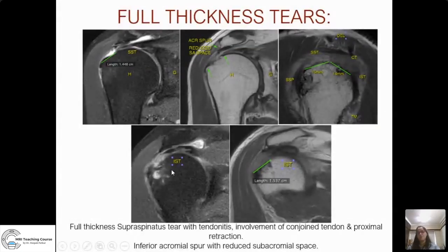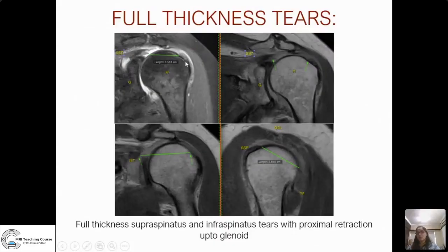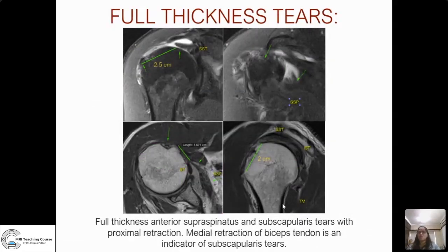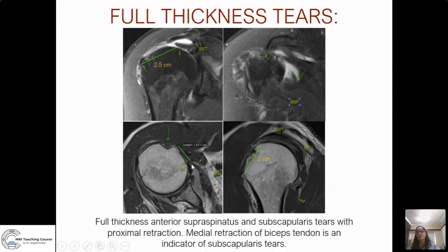In cases of large anterior supraspinatus tears with retraction up to the glenoid, extension into the infraspinatus tendon can be seen. On sagittal images the footprints and insertions of all tendons are visible: anteriorly the subscapularis, and the supra- and infraspinatus insertions may be absent with only a few infraspinatus fibers remaining, while teres minor is preserved. On axial images, an empty bicipital groove is seen, and the biceps tendon can be traced medially — almost adjacent to the glenoid fossa — representing medial subluxation of the biceps tendon with a retracted subscapularis muscle and tendon complex, in a case of combined anterior supraspinatus and subscapularis tear from trauma.